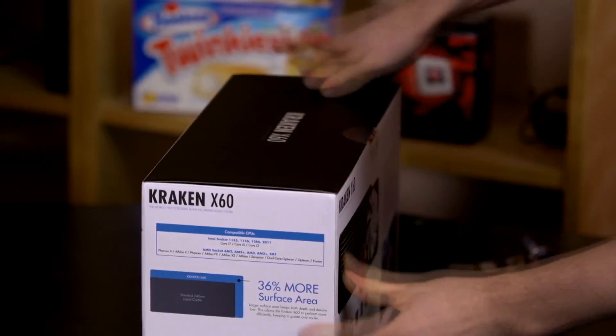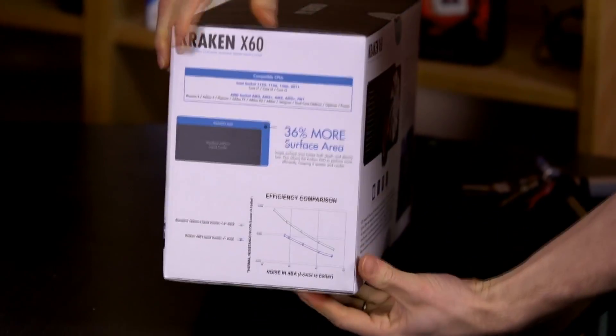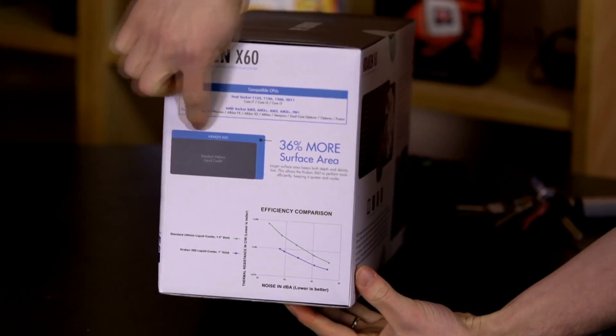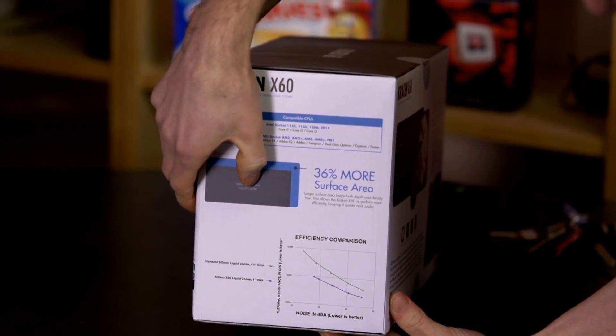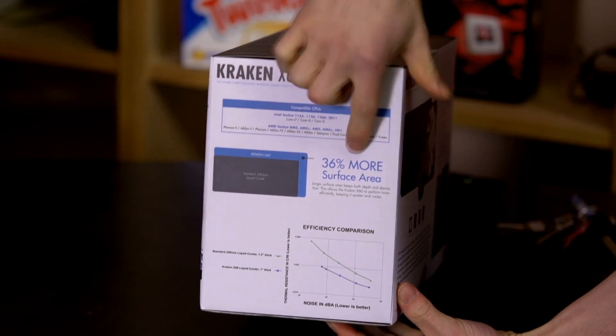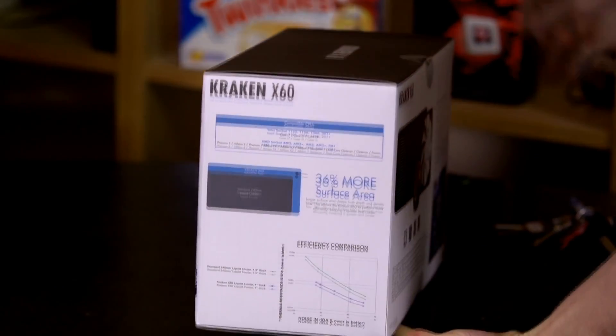And you can see that NZXT has unabashedly compared their Kraken X60 to a standard 240 millimeter liquid cooler. So that would be a dual 120, saying it has 36% more surface area. Now not only that, but that's also going to give you more than 36% more usable surface area.